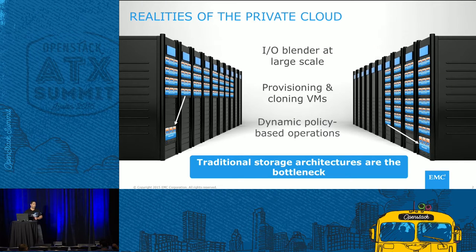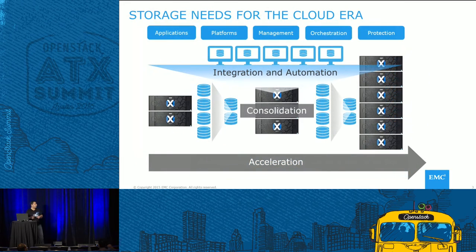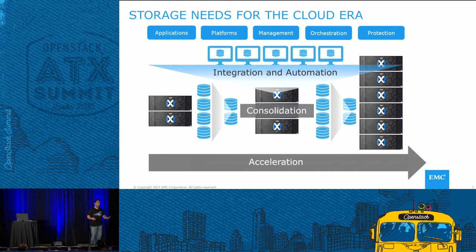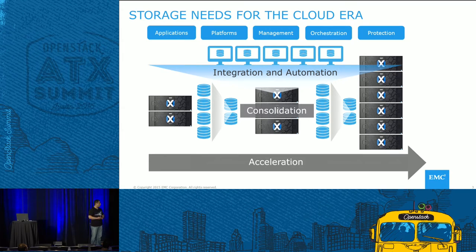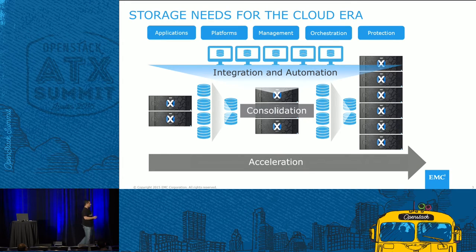So what do you need to make sure your private cloud — your OpenStack private cloud — runs optimally and predictively on storage? If you think about the storage requirements, the first and most basic one is acceleration. Essentially, that means you want to be able to deploy your private cloud quickly. Time to value has become extremely important. It has become a competitive factor for many organizations. So you want to be able to deploy new services quickly, and it also needs to provide that kind of performance that your new applications need.